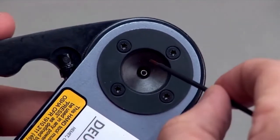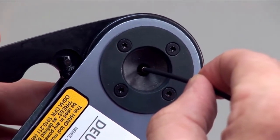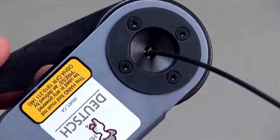Insert the stripped wire into the contact. Squeeze the handles closed. The handles will only open if the crimp is complete.